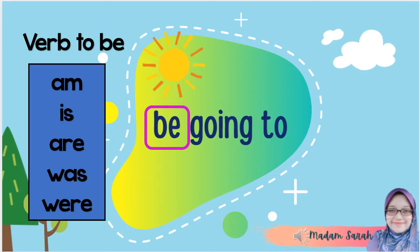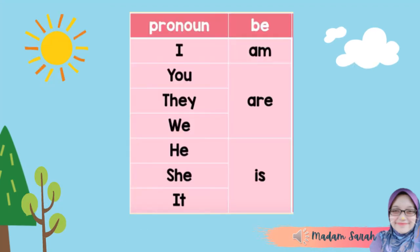Verb to be. There are 5 verbs to be that you need to know: am, is, are, was, and were. Am, is, and are are used in present tense, while was and were for past tense. So, when to use is, are, and am?